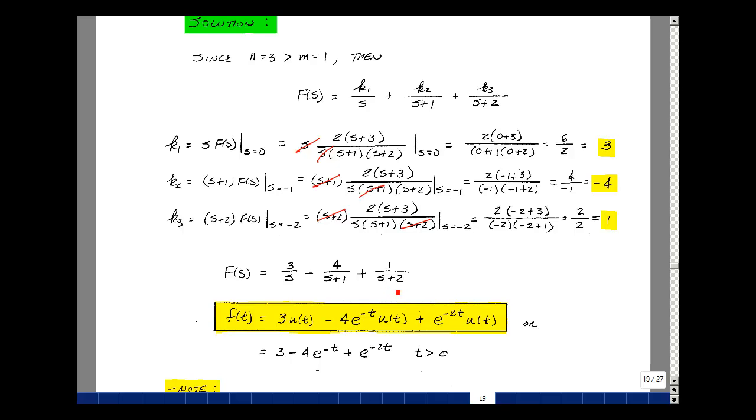All these are multiplied by u(t), but we're looking at functions where t greater than 0, so you can drop the u(t) terms. We just have 3 - 4e^(-t) + e^(-2t) for t greater than 0.